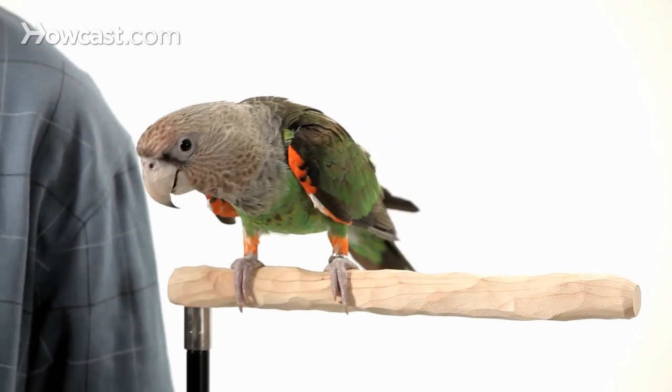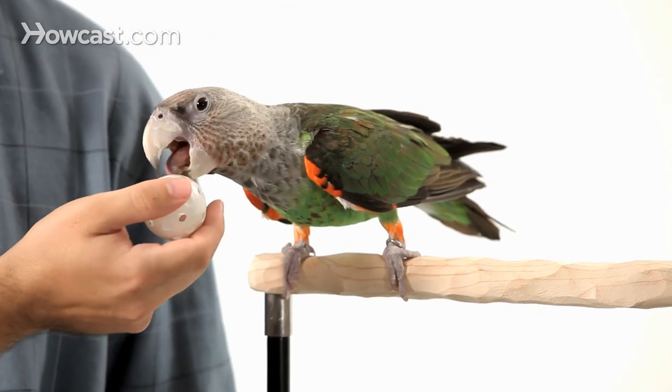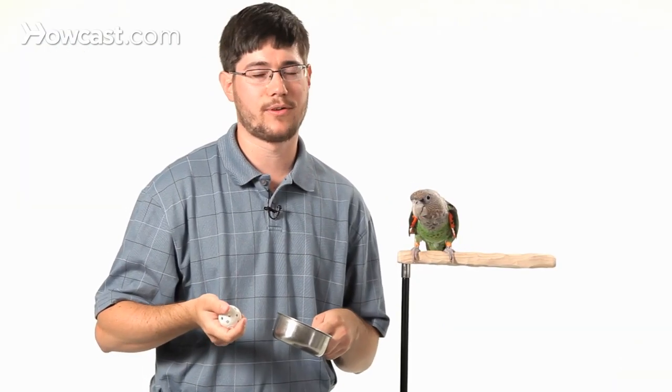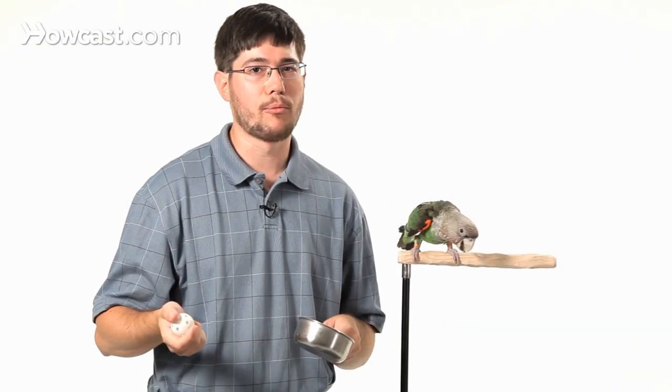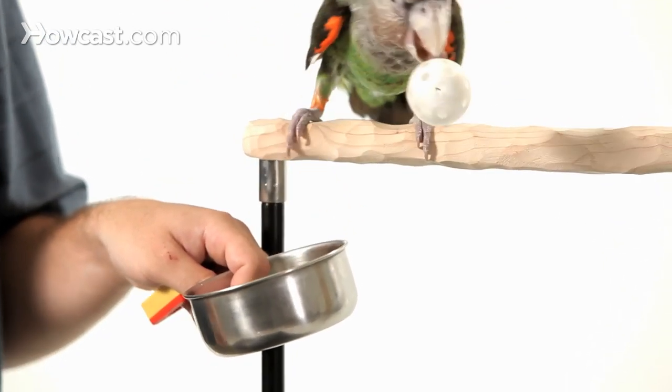So the first step is to teach a bird to hold the object, and most parrots are inquisitive and will hold things in their beak just because they like to play with toys. An inquisitive bird that's never held the object before may hold it for 10 seconds, 30 seconds, a whole minute. And all you're going to do is you're going to have them hold the object, and you're going to put the bowl under and just wait for them to drop it.